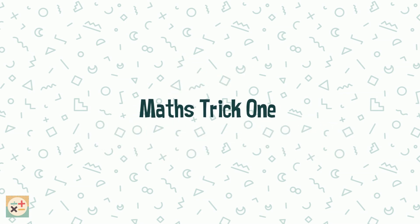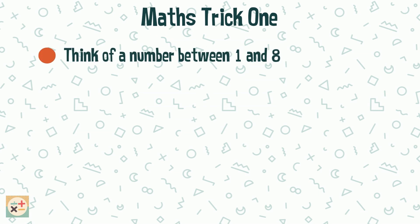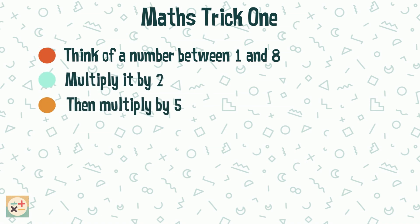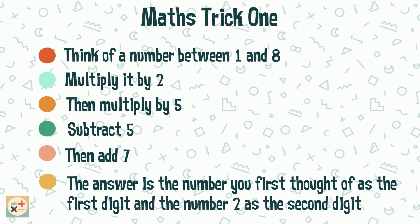Let's dive right into this first magic maths trick. Think of a number between 1 and 8. Multiply it by 2. Then multiply the result by 5. Subtract 5. Then add 7. This final answer is made up of your original number as the first digit, and the number 2 as the second digit. Let's see how this trick works.